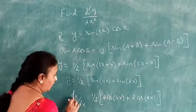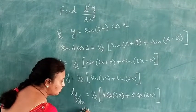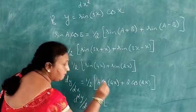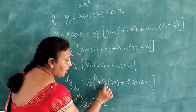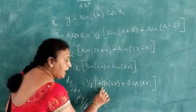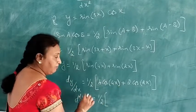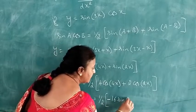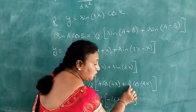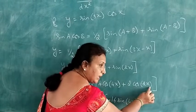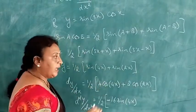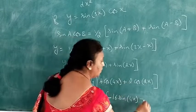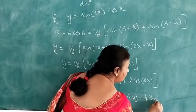For the second order derivative, differentiate dy/dx again. d²y/dx² equals 1/2 into: derivative of cos 4x is minus 4 sin 4x, giving minus 4 into 4; and derivative of cos 2x is minus 2 sin 2x, giving minus 2 into 2 which is minus 4 sin 2x. Multiplying through by 1/2 gives minus 8 sin 4x minus 4 sin 2x.